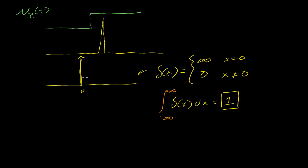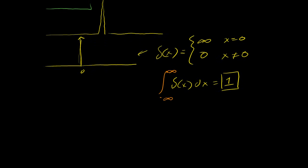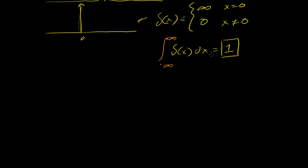You might say that's a crazy function — I want a better understanding of how someone can construct a function like this. So let's see if we can satisfy that. But once that's satisfied, we're going to start taking the Laplace transform of this, and then we'll start manipulating it. Let me construct another function — let's call it d sub tau.